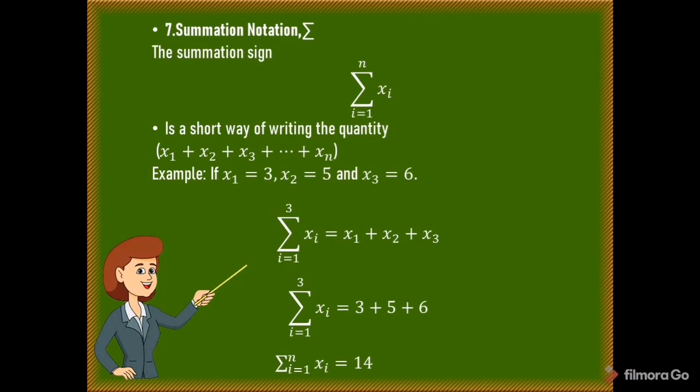Example of summation notation: if x₁, x₂, and x₃ are each equal to values, we need to find the summation of x sub i from i equals 1 to 3. We write x₁ + x₂ + x₃, which equals 14.